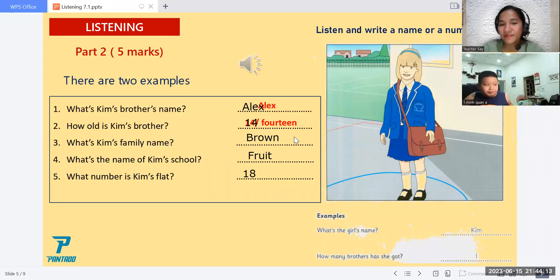And how about number three? Number three was Kim's family name, Brown. Yes, Brown. Okay, very good again.